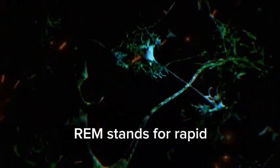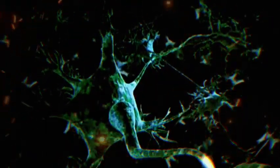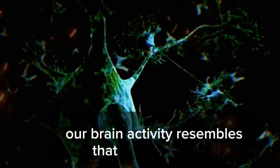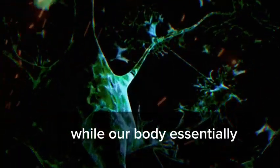REM stands for rapid eye movement, and it's the stage where most dreaming occurs. During REM sleep, our brain activity resembles that of being awake while our body essentially becomes paralyzed. This stage is crucial for processing emotions, consolidating memories,